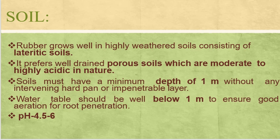Regarding soil requirements, rubber grows well in highly well-aerated soil. It prefers well-drained porous soil which is moderate to highly acidic in nature. The depth required is a minimum of one meter without any intervening hard pan or impenetrable layer. The water table should be below one meter to ensure good aeration for root penetration. The suitable pH range is 4.5 to 6.